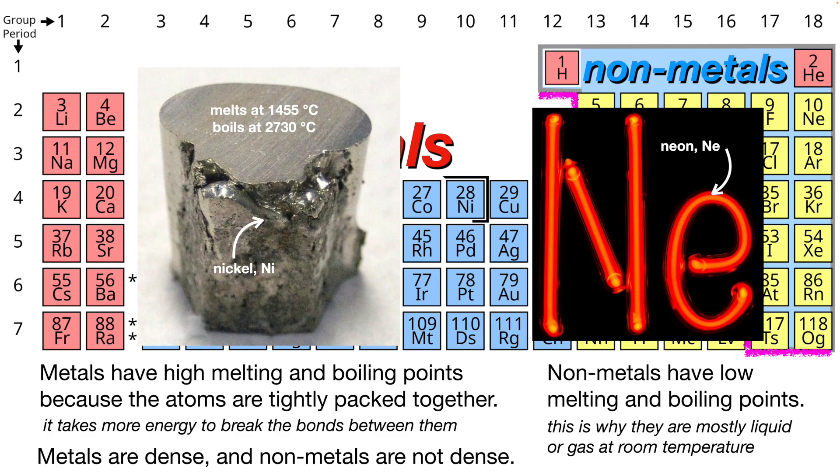Nickel is an extremely tightly packed metal. It melts at 1,455 degrees Celsius and will boil off into a gas at 2,730 degrees Celsius.